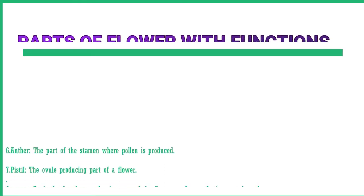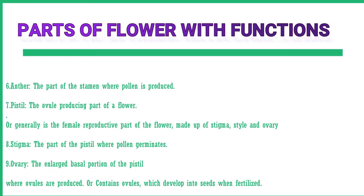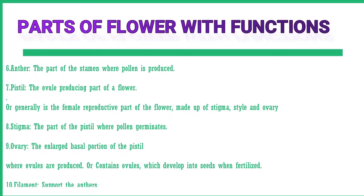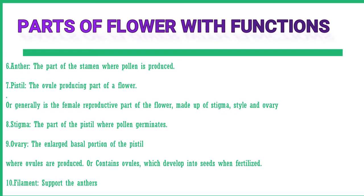Pistil: the ovule-producing part of a flower. The ovary often supports a long style topped by a stigma. The mature ovary is a fruit and the mature ovule is a seed. Generally, it is the female reproductive part of the flower made up of stigma, style, and ovary. Stigma: the part of the pistil where pollen germinates. Ovary: the enlarged basal portion of the pistil where ovules are produced or contains ovules which develop into seeds when fertilized.